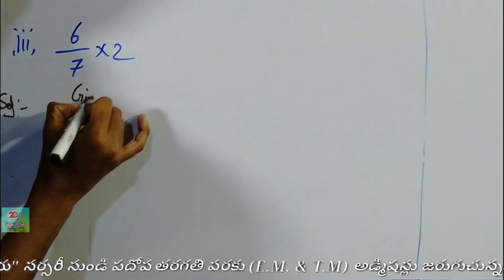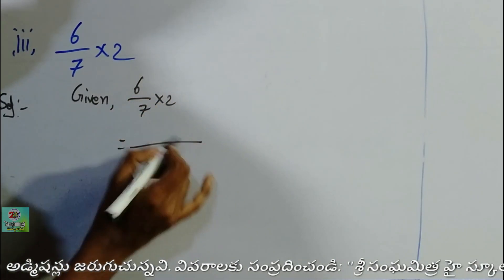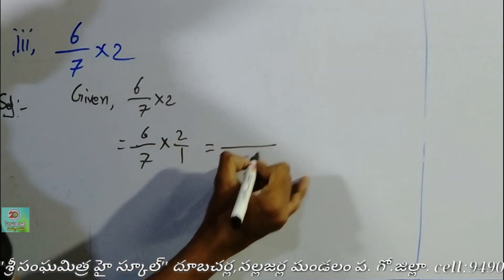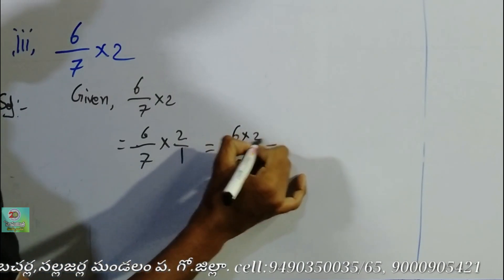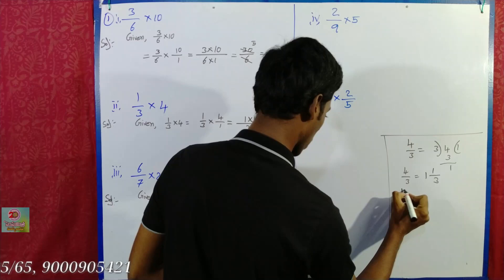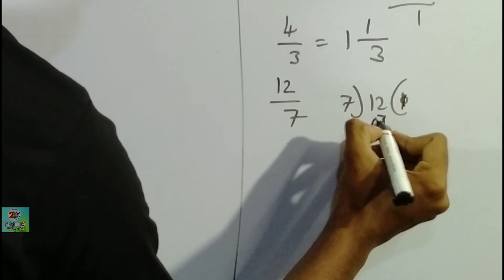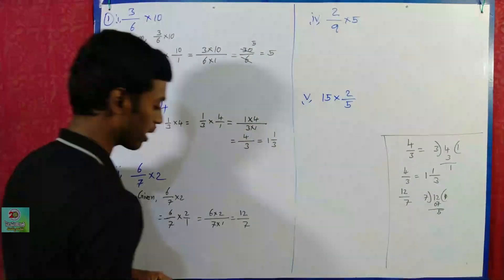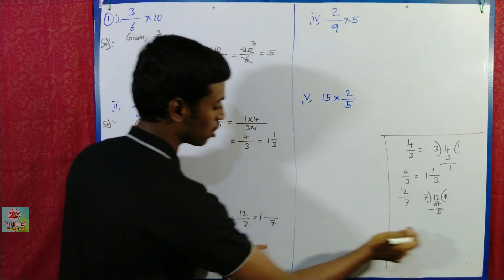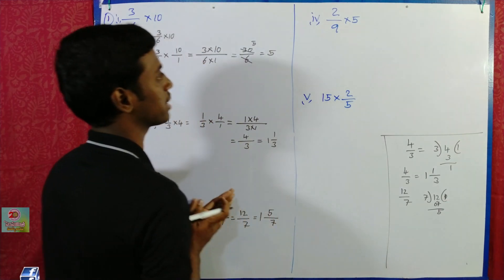Next, given: 6 by 7 into 2. That is 6 by 7 into 2 by 1, which equals 6 into 2 over 7 into 1 equals 12 by 7. Converting 12 by 7 to a mixed fraction: 7 goes into 12 once with remainder 5, so the answer is 1 and 5 by 7.